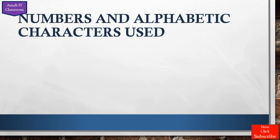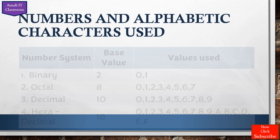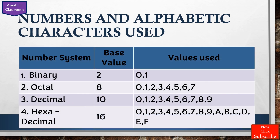Now, what are the number systems we should learn? We have to learn four number systems. The first one is binary, the second is octal, the third is decimal, and the fourth is hexadecimal. Binary means the base value is 2.